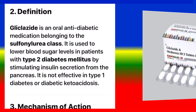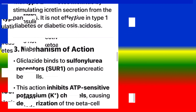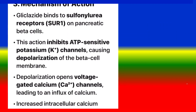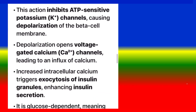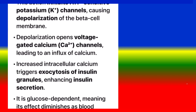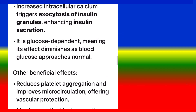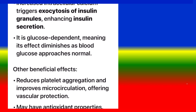It is not effective in type 1 diabetes or diabetic ketoacidosis. Mechanism of action: Gliclazide binds to sulfonylurea receptors (SUR1) on pancreatic beta cells. This action inhibits ATP-sensitive potassium (K+ channels), causing depolarization of the beta cell membrane. Depolarization opens voltage-gated calcium channels, leading to an influx of calcium. Increased intracellular calcium triggers exocytosis of insulin granules, enhancing insulin secretion. It is glucose-dependent, meaning its effect diminishes as blood glucose approaches normal.